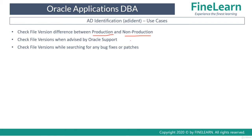Sometimes when you raise an Oracle SR service request to fix an issue, Oracle Support may ask you to run the adident command to find the file versions and provide them the details. Similarly, when you are checking documents in Oracle Support to fix any issue, you might be checking the file versions recommended by Oracle. These are the general use cases when you use adident or the strings command.